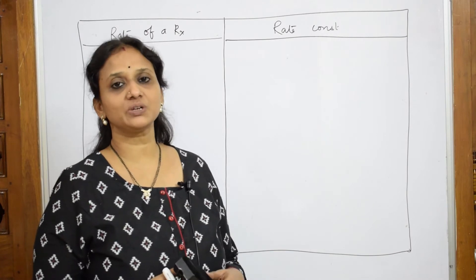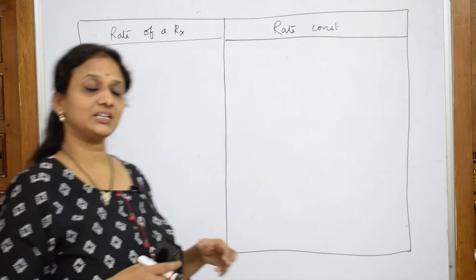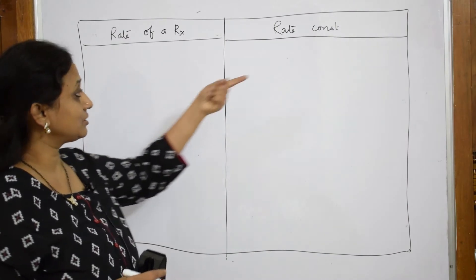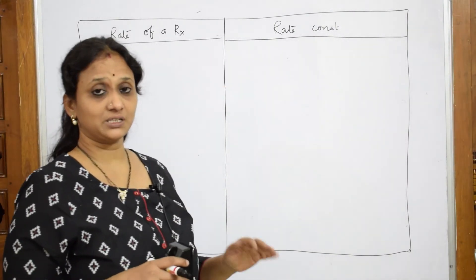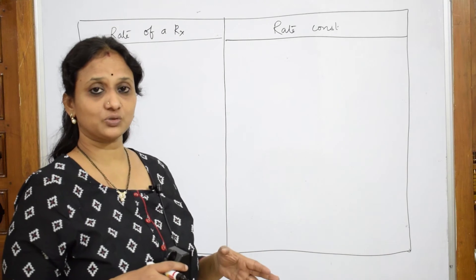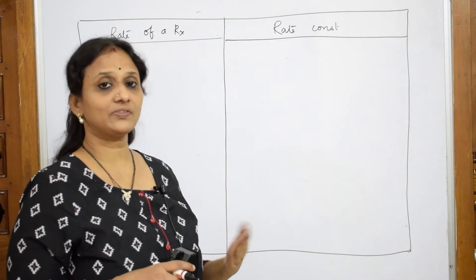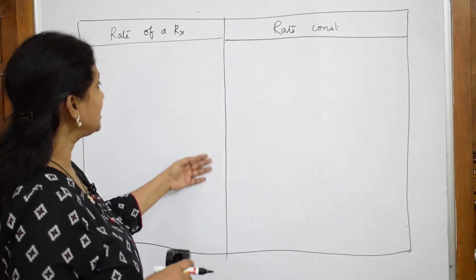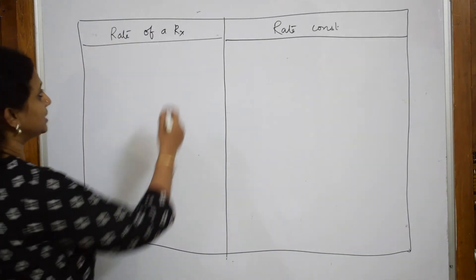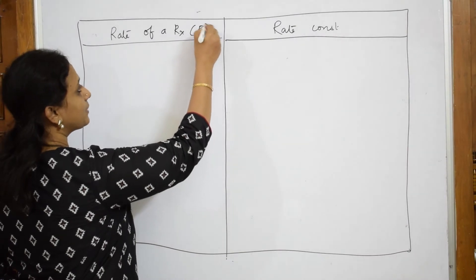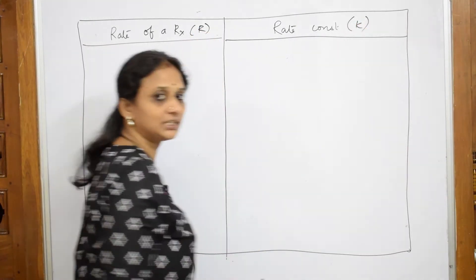Now, let us do the difference between rate of reaction and rate constant, because I don't want you to lose those two marks out of five — five is the total marks of the chapter, two marks may be definitions or differences and three marks is a numerical. So let us write what is the difference between rate of reaction and rate constant. Rate of reaction is represented by capital R and rate constant is represented by k.